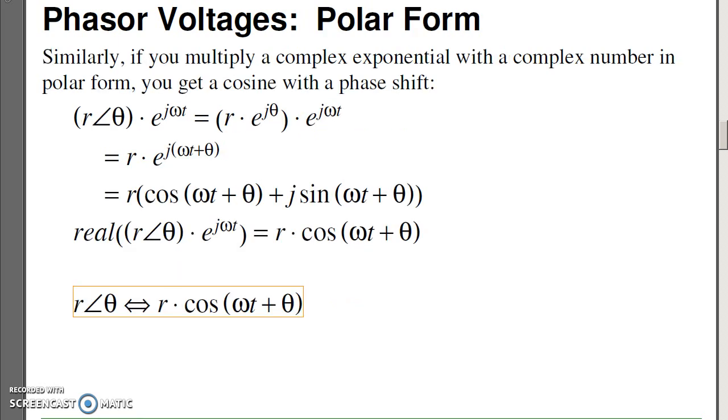If you prefer a polar form, you can also represent complex numbers. If I have a complex number, r at angle theta, what that means is r times e to the j theta. If that's multiplied by the complex exponential, doing some algebra, what you wind up with is the real part is r cosine theta omega t, or r cosine omega t plus theta. So r at angle theta means r cosine omega t plus theta. The omega t is understood. If I have a circuit where the input is 60 hertz, everything is 60 hertz, so you don't have to write that down. What I care about is the amplitude and the angle. Those are the things that will vary in the circuit.